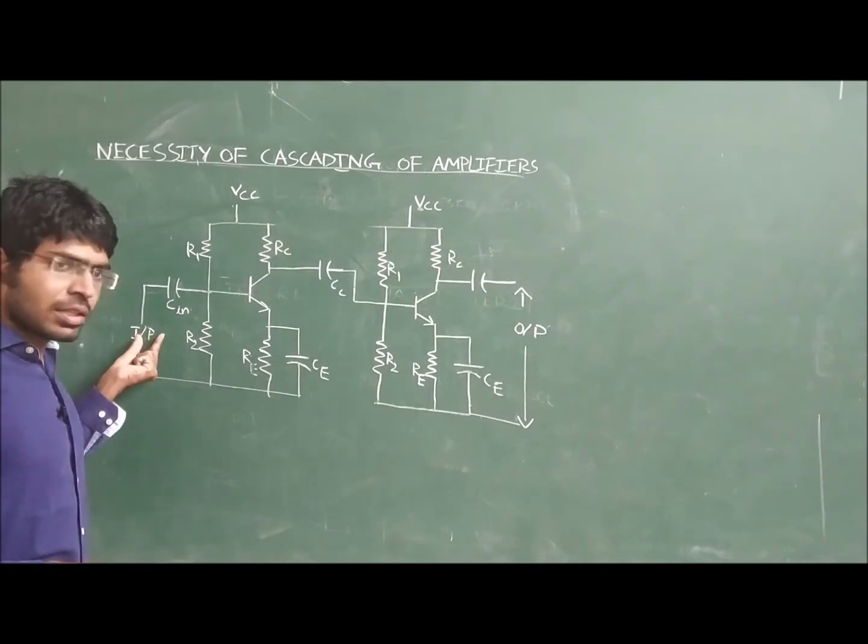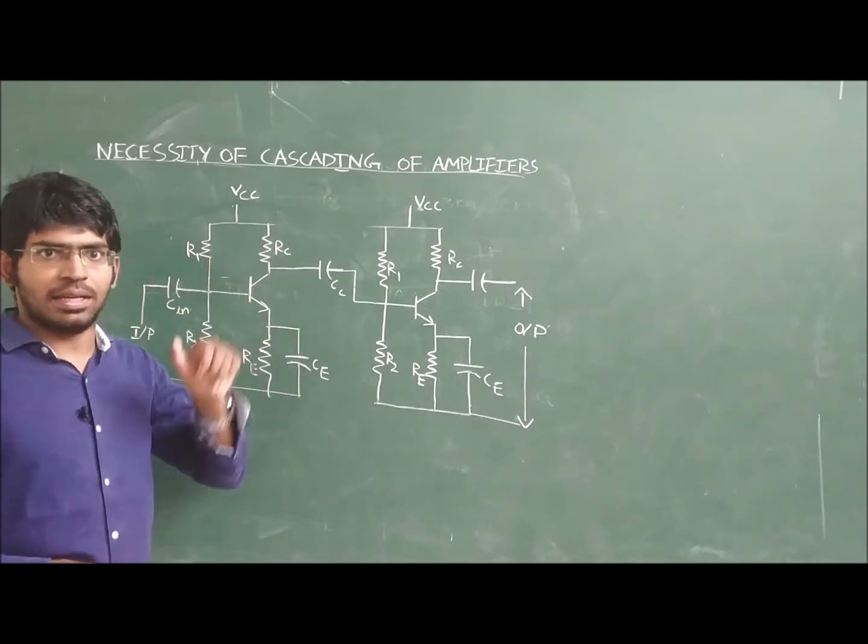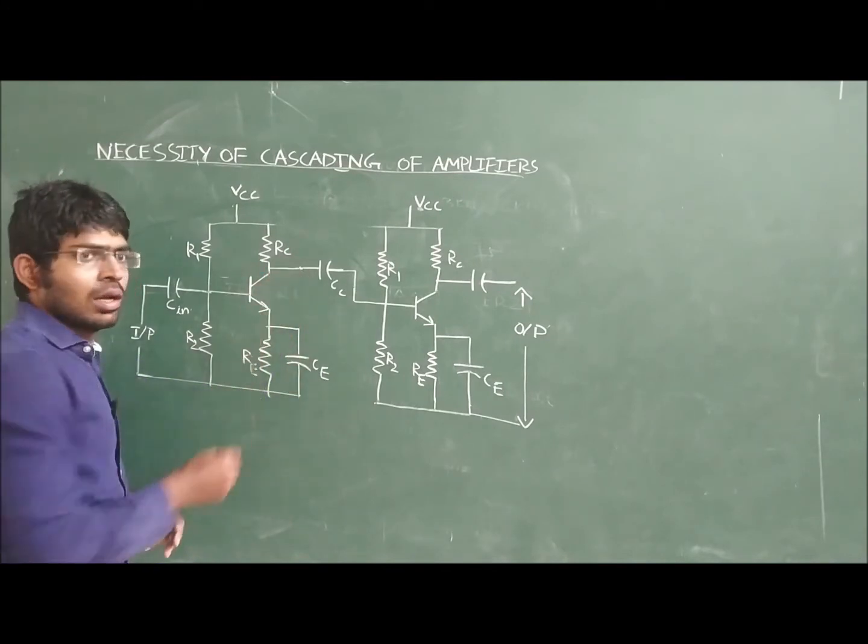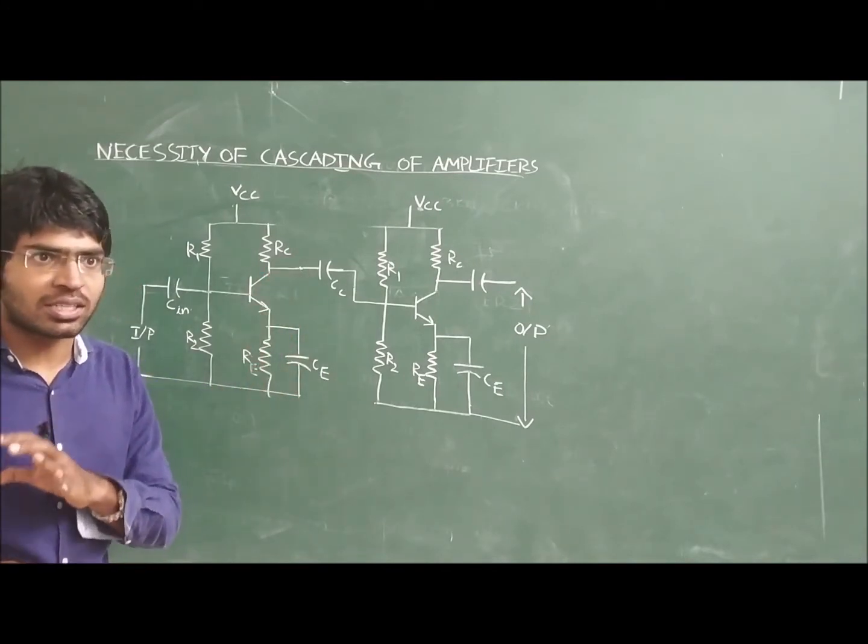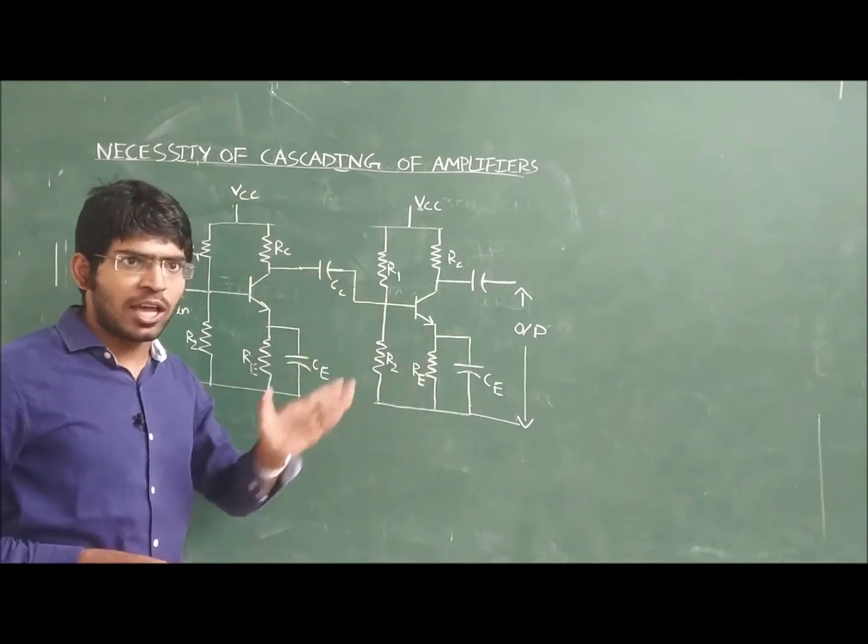When we are giving this voltage signal, this amplifier is amplifying that and after the amplification we are getting the output here. But still that output is not sufficient, so we are using the same replica of the amplifier.